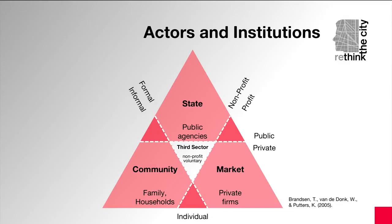Lastly, if you look at the center of the triangle, you will find a fourth type of actor, which we call the third sector. These are organizations such as social enterprises, which operate like businesses but are not for profit. In other words, they have a social mission but need to be financially viable to continue to exist.